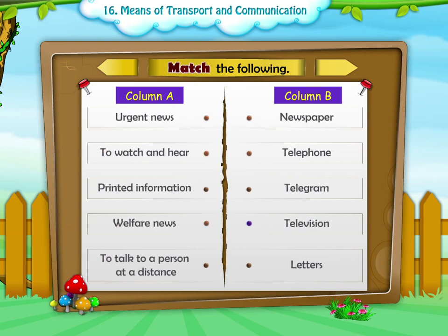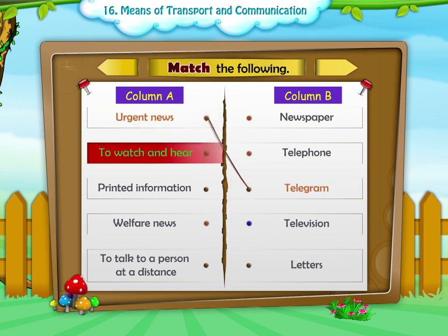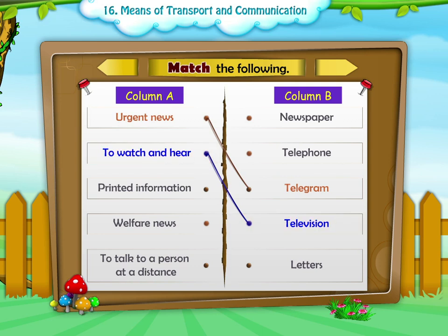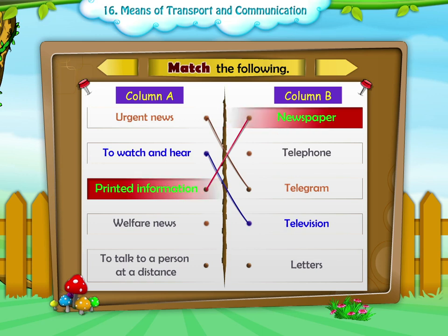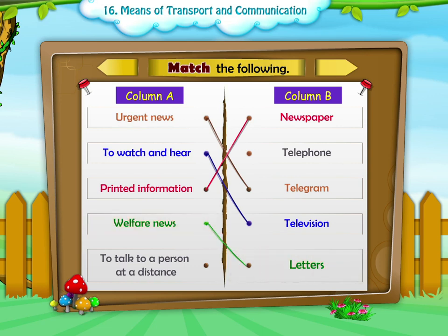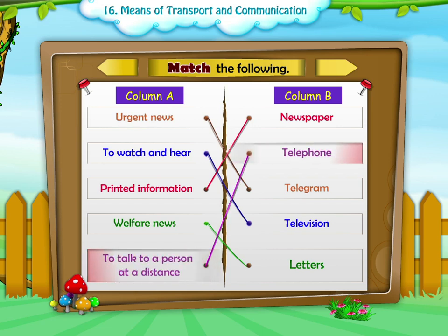Activity Two: Match the following. Urgent news — Telegram. To watch and hear — Television. Printed information — Newspaper. Welfare news — Letters. To talk to a person at a distance — Telephone.